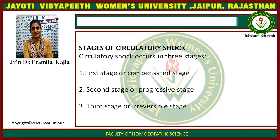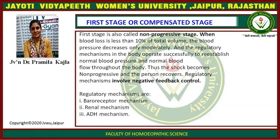Circulatory shock occurs in three stages: first, the compensated stage; second, the progressive stage; and third, the irreversible stage. The first stage is also called the non-progressive stage. When blood loss is less than 10% of total volume, blood pressure decreases only moderately and the regulatory mechanisms in the body operate successfully to re-establish normal blood pressure and normal blood flow. The shock becomes non-progressive and pressure recovers. Regulatory mechanisms include baroreceptor mechanism, renal mechanism, and ADH mechanism.